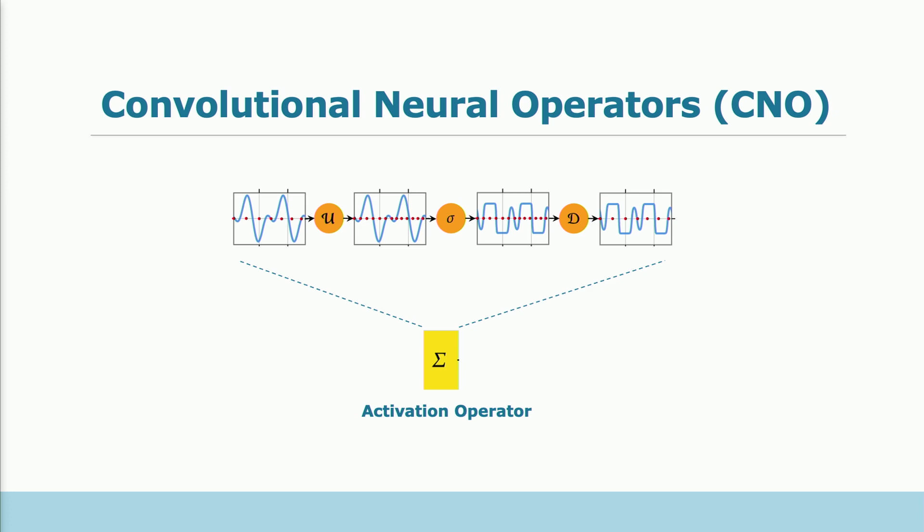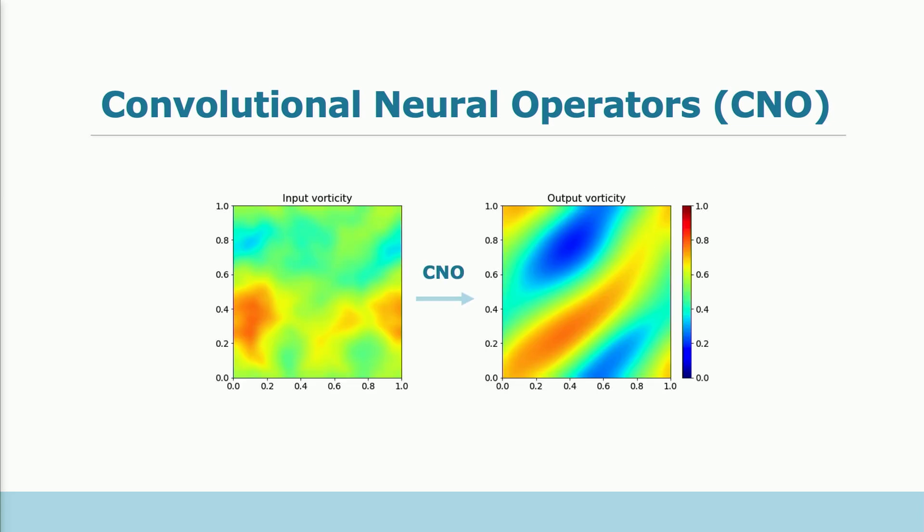In a similar manner, we modified the upsampling and the downsampling operator. And in this way, we get the convolutional neural operator, which now accounts for the fact that we deal with function spaces.